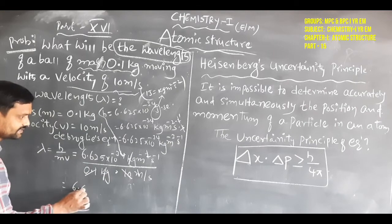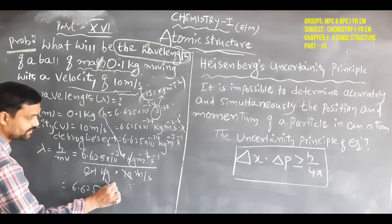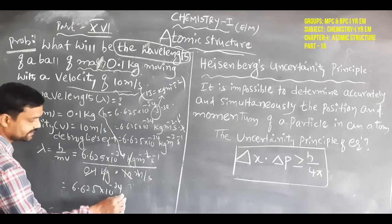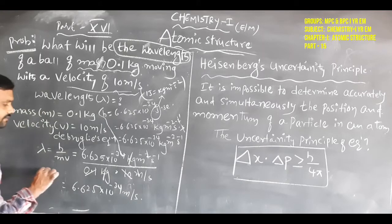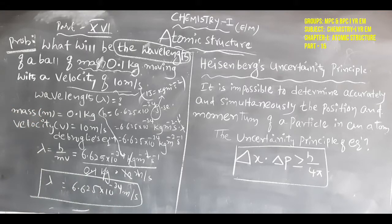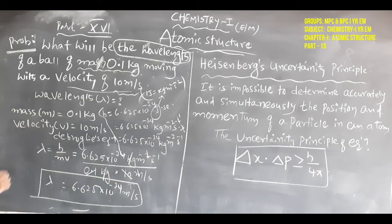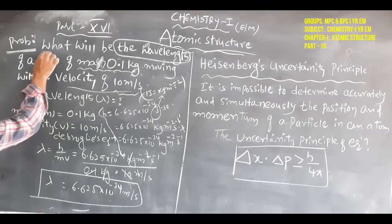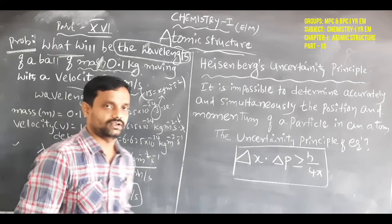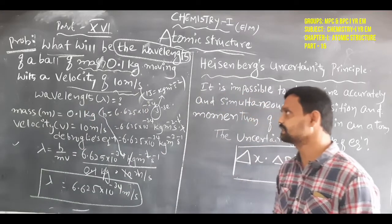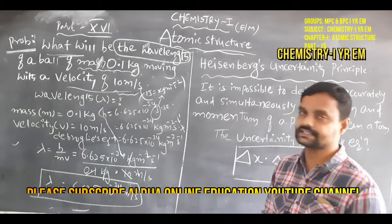The remaining result is 6.625 × 10⁻³⁴ meters. So the wavelength value is 6.625 × 10⁻³⁴ m. By using the de Broglie formula, we find the wavelength of the given ball. These types of problems will be asked from an exam point of view, and this is how we solve them. This concludes the de Broglie concept and equation.